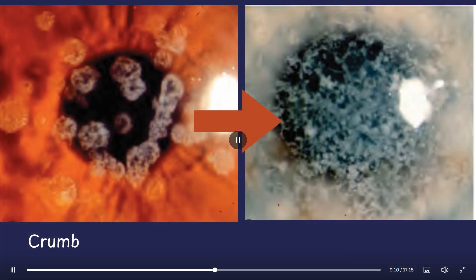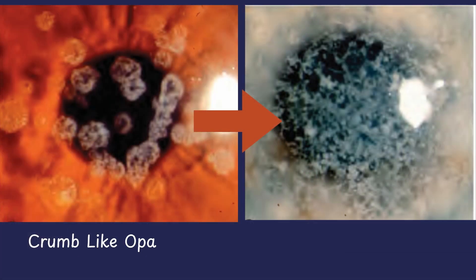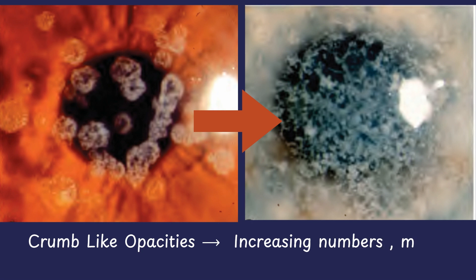Typically, the opacities start as breadcrumb-like deposits, fewer in number, and gradually spread centrifugally as the disease progresses.